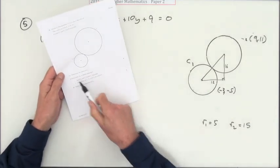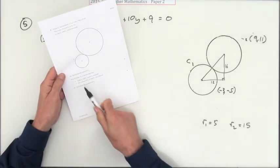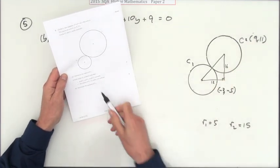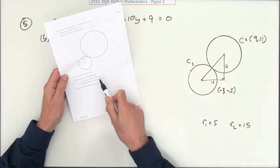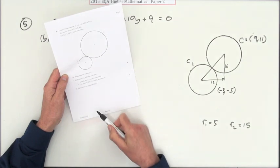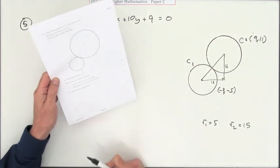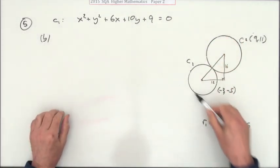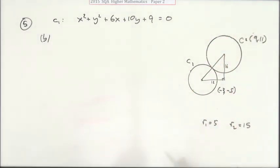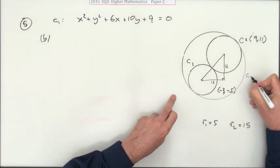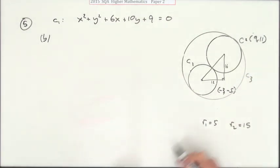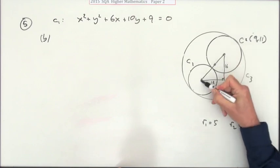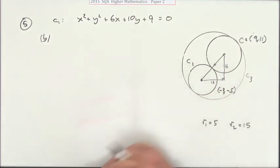For part B, it says a third circle is drawn such that both C1 and C2 touch C3 internally, that means on the inside, and all three centers are in a line, collinear. That means the big circle must go right around the outside but clamped onto them. So C3 must be this big circle here where its center is in line with their centers.